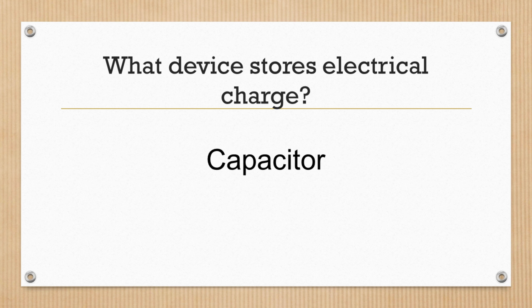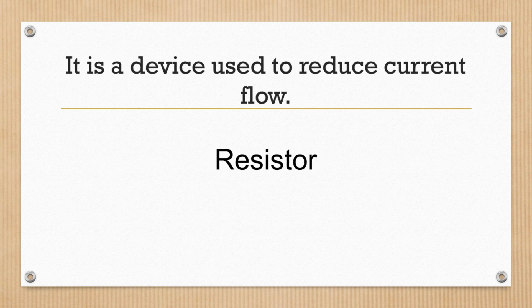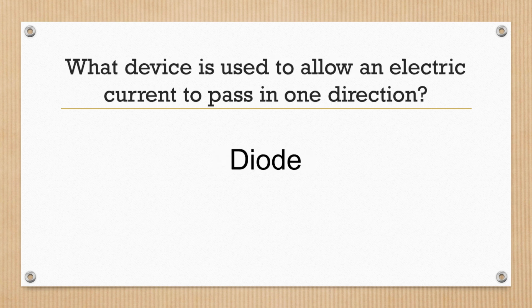What device stores electrical charge? Capacitor. It is a device used to reduce current flow. Resistor. What device is used to allow an electric current to pass in one direction? Diode.